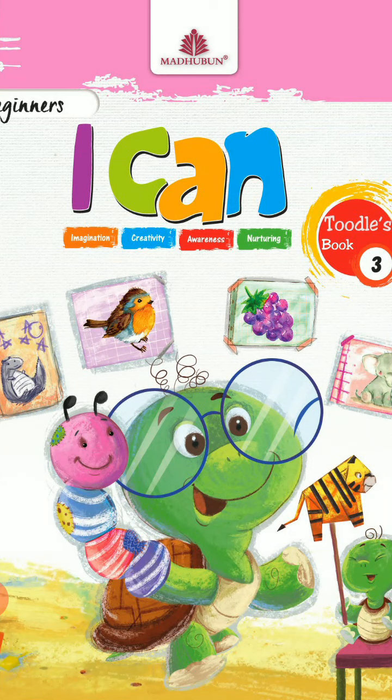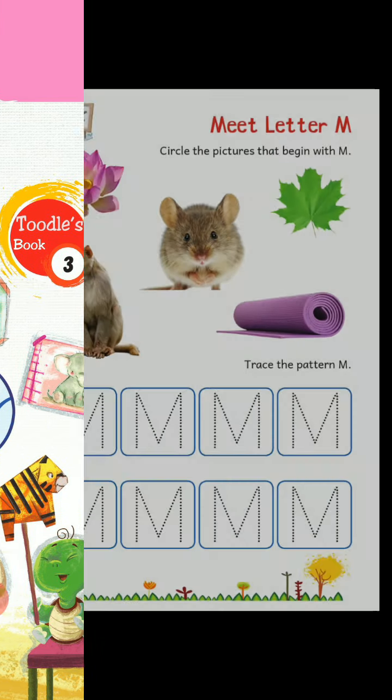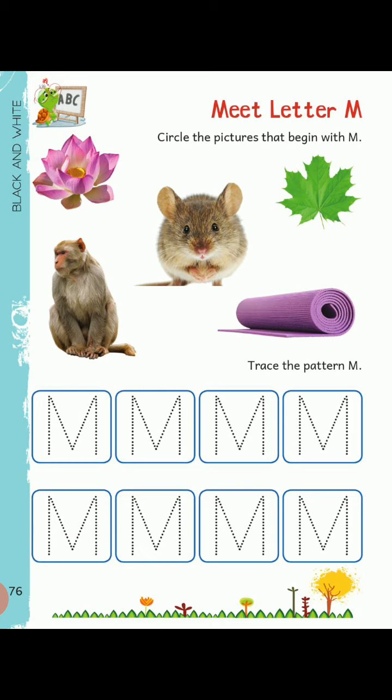Now we will move to our next session. Students, open your I Can Beginner Book 3 and go to page number 76. Here you can see we have an activity to meet letter M. Look at the first part of this page — we have some images and you have to tell me which images begin with the letter M.